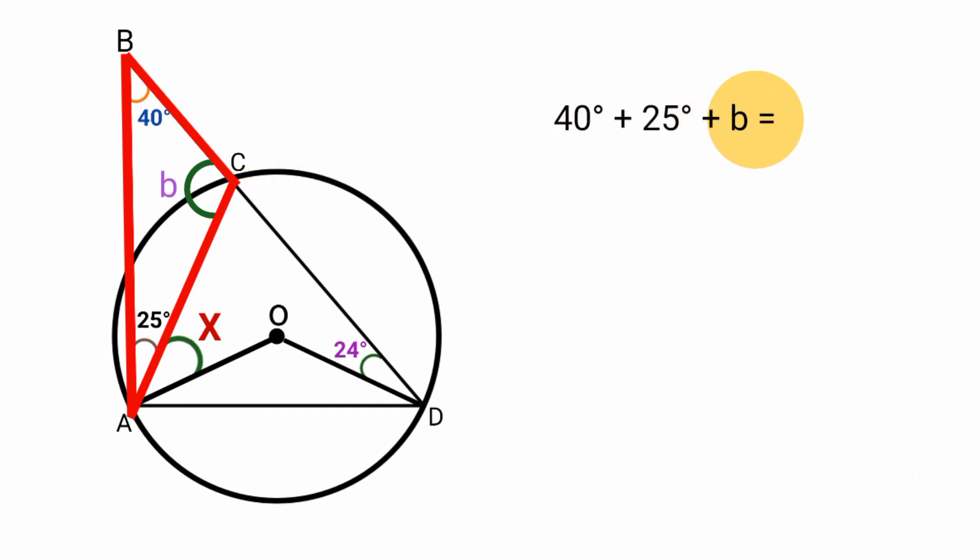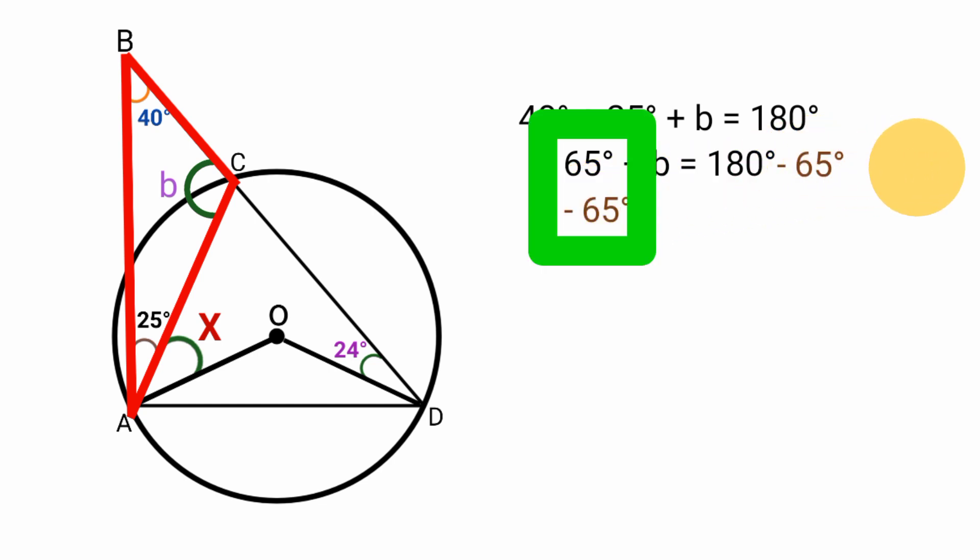40 degree plus 25 degree plus B will be equal to 180 degree. 40 plus 25 is 65, so this will be 65 degree plus B equal to 180 degree. To find the value of B, we subtract 65 degree from both sides. So we are going to have 65 plus B minus 65 is equal to 180 minus 65. 65 minus 65 is 0, so B is equal to 115 degree.